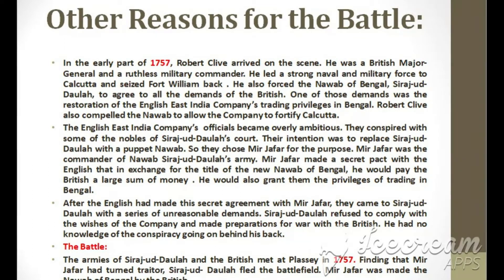The English East India Company's officials became overly ambitious. They conspired with some of the nobles of Sirajud Daula's court, with the intention of replacing Sirajud Daula with a puppet Nawab. They chose Mir Zafar for the purpose — he was the commander of Sirajud Daula's army. Mir Zafar made a secret pact with the English that in exchange for the title of the new Nawab of Bengal, he would pay the British a large sum of money and grant them trading privileges in Bengal. After making this secret agreement, the English came to Sirajud Daula with a series of unreasonable demands. Sirajud Daula refused to comply and made preparations for war, having no knowledge of the conspiracy going on behind his back.